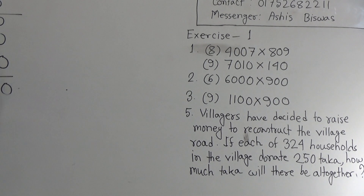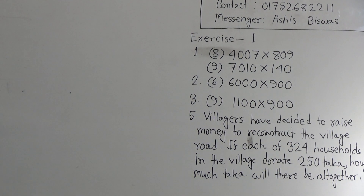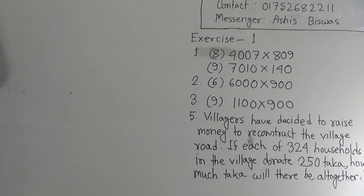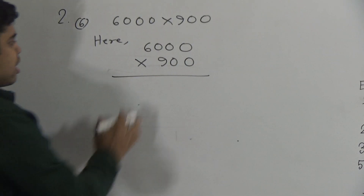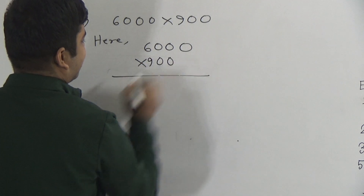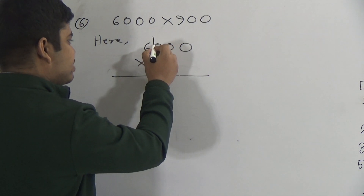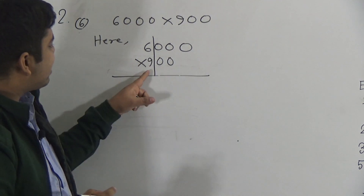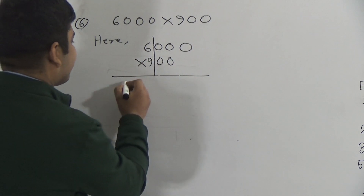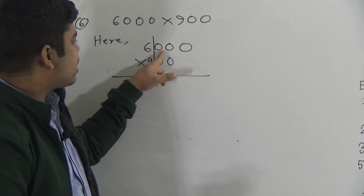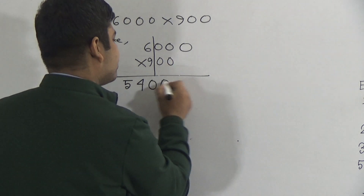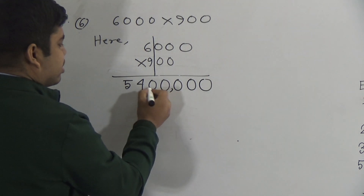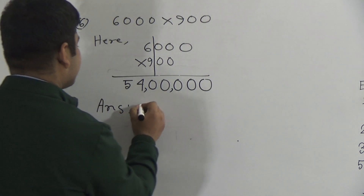Next we shall solve question number 2, sub-number 6. The question is 6,000 multiplied by 900. First I separate the zeros from the digits 6 and 9, and multiply 6 by 9: 6 nines are 54. Then I count how many zeros there are: 1, 2, 3, 4, 5. So I write five zeros after 54, giving 54 lakh as the answer. I hope you have understood.